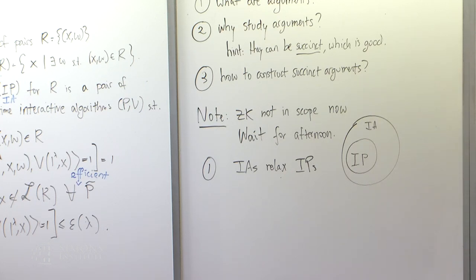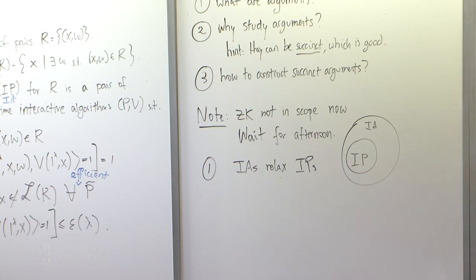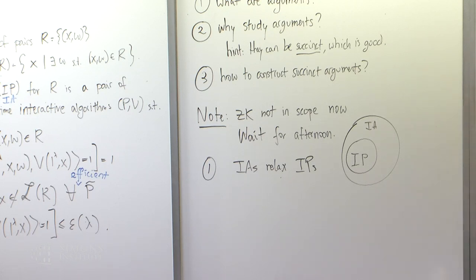So why study arguments? Just like with encryption, we relax information-theoretic security to computational security because we can do more. We want to sharpen what we couldn't do with interactive proofs that we'd like to do with arguments. The answer lies in proofs' limitations. I want to highlight one such limitation.